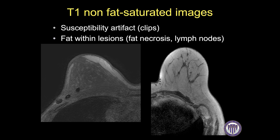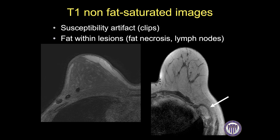On the T1 non-fat saturated images, I look for susceptibility artifacts such as surgical clips or biopsy microclips. In this patient who has had a prior lumpectomy, I can identify the lumpectomy site from the susceptibility artifact from her surgical clips. I also evaluate for fat inside lesions such as fat necrosis, lymph nodes, and in this case, an incidental intramuscular lipoma.